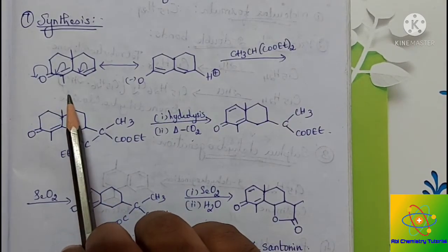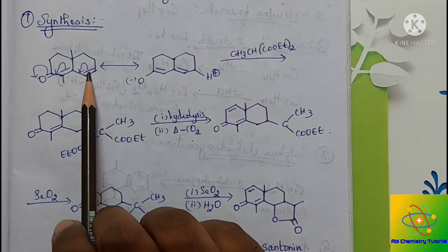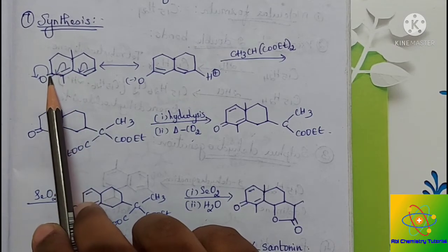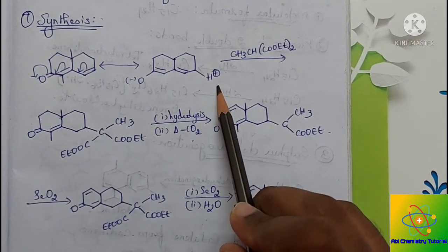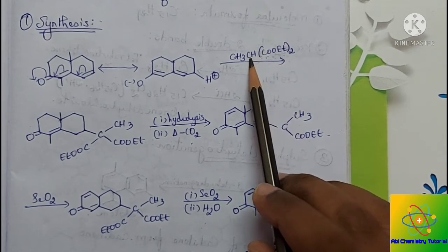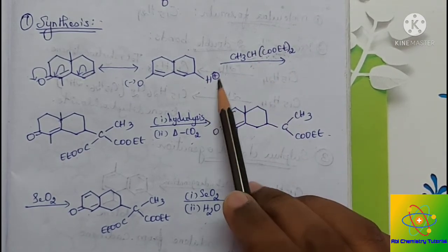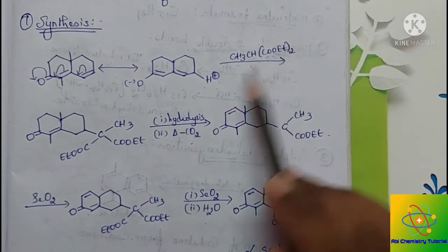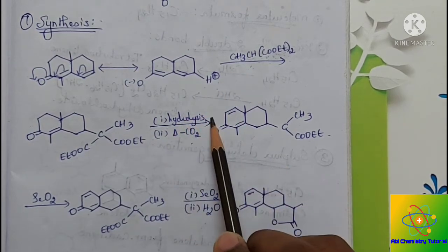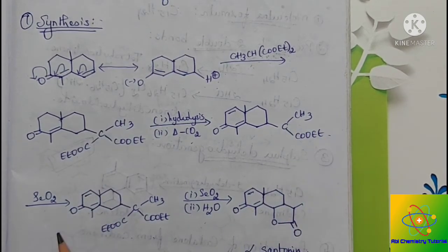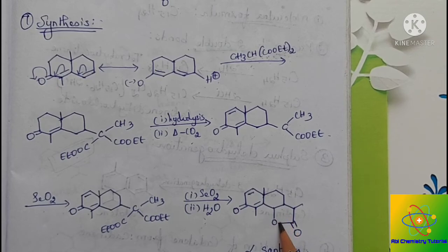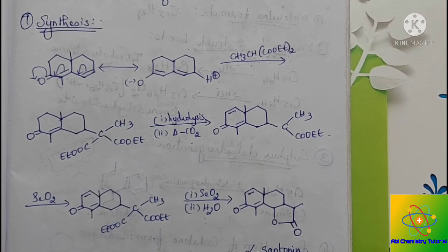In the synthesis, it starts with a precursor compound. The first step involves migration of the double bond and a shift of the C=O bond to oxygen, generating a negatively charged carbon and a proton. Addition of a reagent introduces a carbon bearing CH3 and COOEt (ethyl ester) groups. On subsequent treatment with selenium dioxide and water, a lactone is formed — yielding alpha-santone — thus confirming its structure by synthesis.